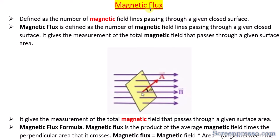So what is this flux — we will just try to repeat it. Flux is basically a flow; it consists of imaginary lines that pass through a physical quantity or through a surface. That is the meaning of flux. So now let us understand what magnetic flux is.